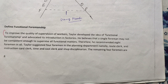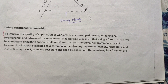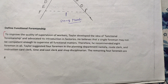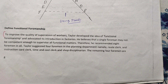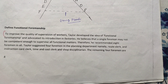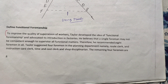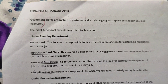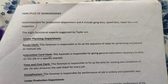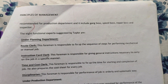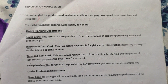Taylor suggested four foremen in the planning department, namely route clerk, instruction card clerk, time and cost clerk, and shop disciplinarian. The remaining four foremen are recommended for the production department, which includes gang boss, speed boss, repair boss, and inspector.